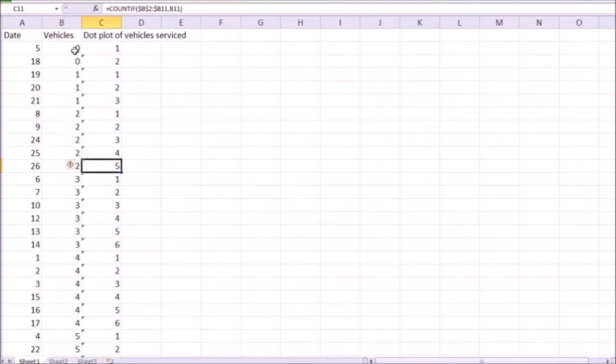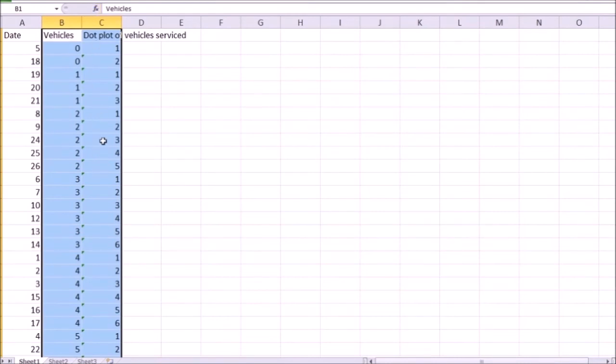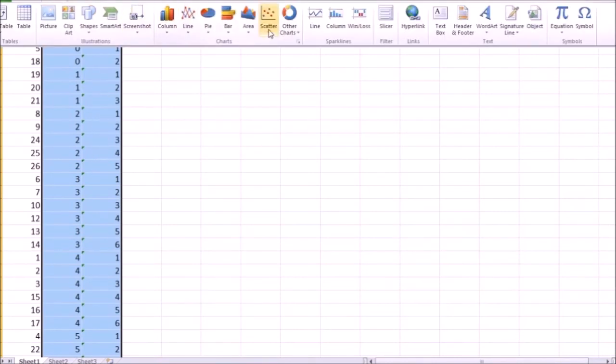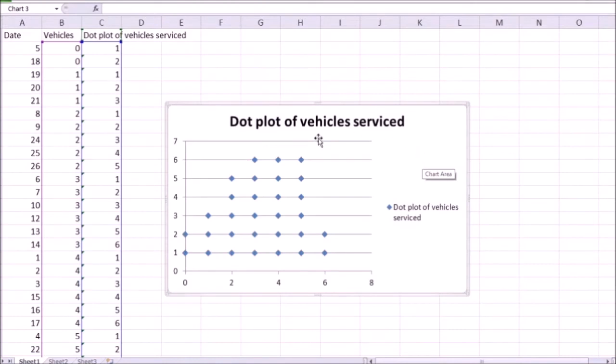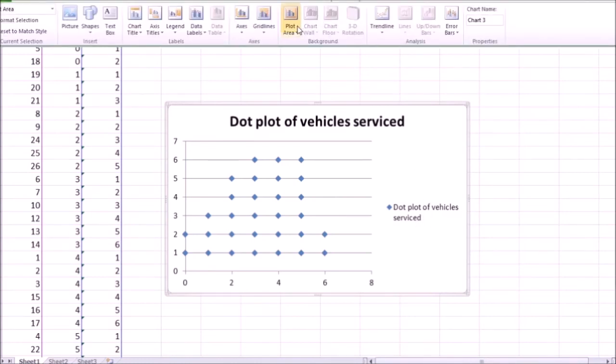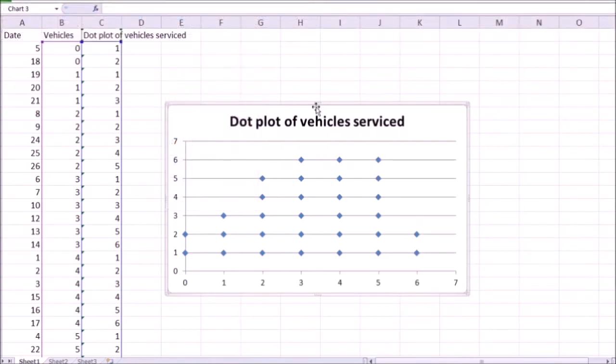And what we do next is we select two columns, one for the variable of interest and one for our count for the dot plot, and insert a scatter plot. In this case, we are illustrating the dot plot, the number of vehicles served, so I do not need the legend. To utilize space efficiently, I'm going to go to the layout and get rid of the legend.